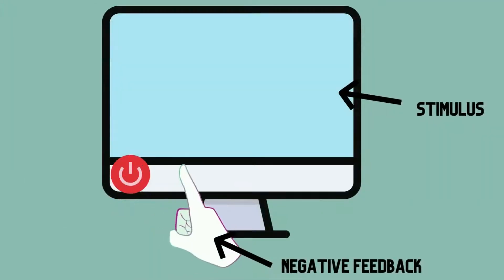To cut it short, negative feedback is an opposite response to the stimulus. It works to shut off the original stimulus. In other words, it tries to reduce its intensity.